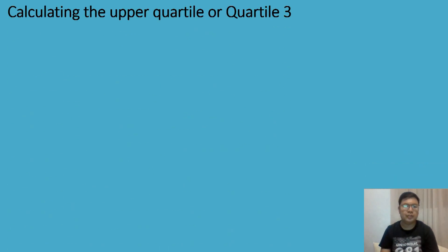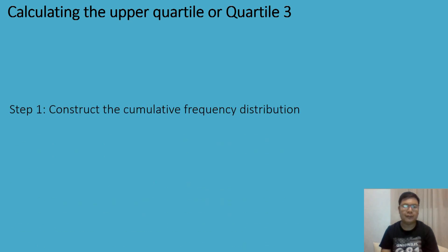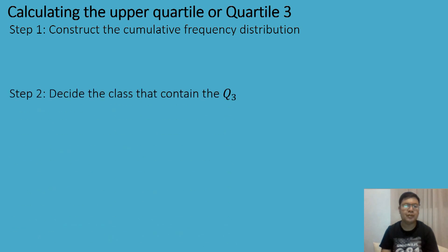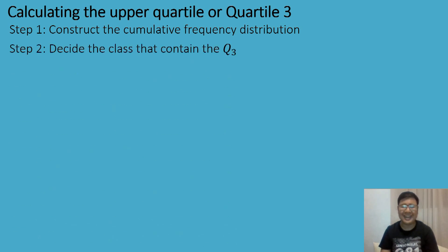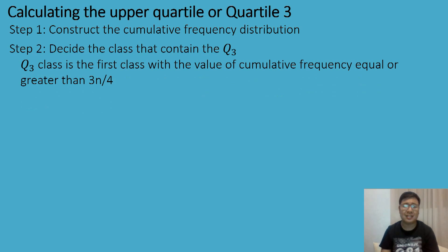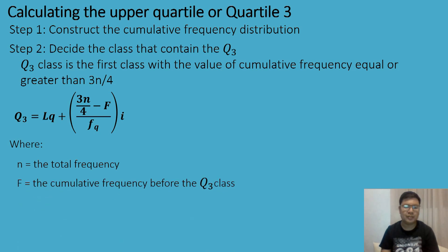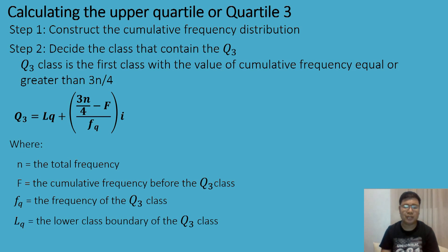We will not compute Q2 because the value of quartile 2 is the same as the median. If you know how to compute the median, you also know how to compute Q2. Now let's have the steps in computing quartile 3 or the upper quartile. The first step is to construct the cumulative frequency distribution, then decide the class that contains the Q3 class — it is the first class with cumulative frequency equal to or greater than 3N/4.